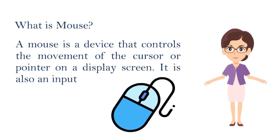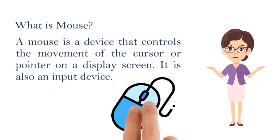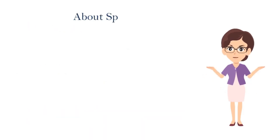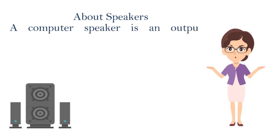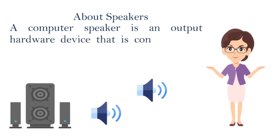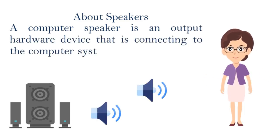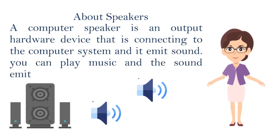Number four: Mouse. It is a device that controls the movement of the cursor or pointer on the display screen. It is also an input device. Number five: Speaker. It is an output device that is connected to the computer system and it emits sound. You can play music and the sound is emitted to the speakers.